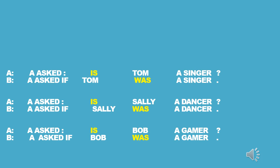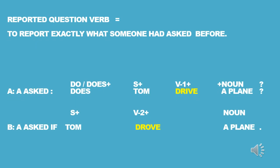More about reported questions using the verb to be. 'A asks: Is Tom a singer?' Reported: 'A asks if Tom was a singer.' 'A asks: Is Sally a dancer?' Reported: 'A asks if Sally was a dancer.' 'A asks: Is Bob a gamer?' Reported: 'A asks if Bob was a gamer.' So B just reports exactly what A had asked — that is reported questions.